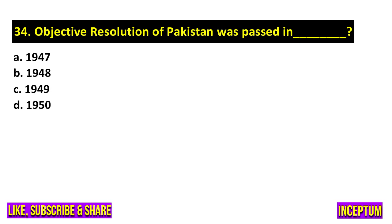Question number 34. The Objective Resolution of Pakistan was passed in the year. In the options: 1947, 1948, 1949, 1950. And the right answer of this question is option C, 1949.